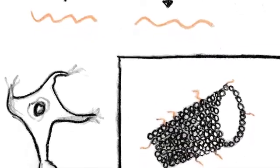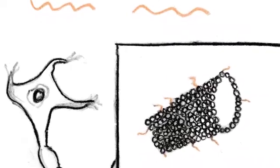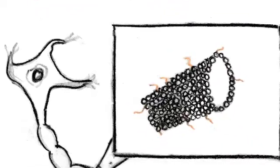Tau is not necessary for normal cell function, but it is very good at stabilizing microtubules, and tau is regulated through phosphorylation.